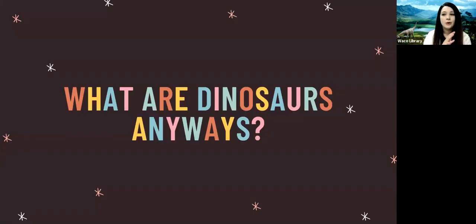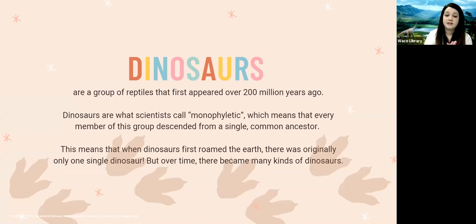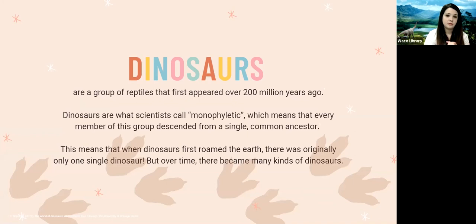So first question — what are dinosaurs anyway? Dinosaurs are a group of reptiles that first appeared over 200 million years ago. And dinosaurs are what scientists call monophyletic, which means that every member of this group came from one single common ancestor. So when dinosaurs first roamed the earth, there was originally only one dinosaur, but over time there became many different kinds.